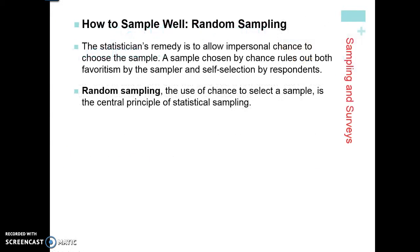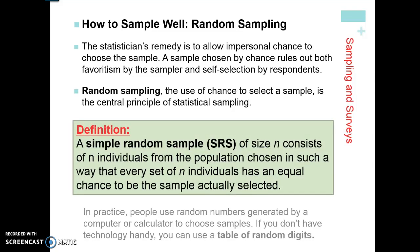The best way to sample is through random sampling — a sample chosen by chance alone. A sample chosen by chance rules out both favoritism by the sampler and self-selection by the respondent. With random sampling, anyone in our population has the opportunity to be chosen and participate. Random sampling helps to reduce bias and give us a better picture of what the true population proportion or mean is.